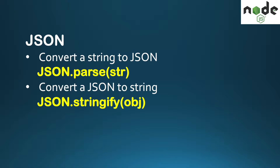There are two functions that JSON provides. One is for converting a string to a JSON object, which is JSON.parse — give it the string as a parameter and it will return the JSON object. The other is JSON.stringify — give it the JSON object and it will return the string. So while reading from a file we get the contents as a string and convert it using JSON.parse, and while writing we use JSON.stringify to convert the JSON to a string and write to the file.